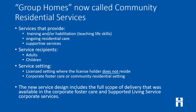Group homes — the lay term — are now called Community Residential Services. These are services that provide training or habilitation within the Developmental Disabilities waiver. Habilitation is very important and required to teach life skills, train, educate, mentor, and challenge the person to be as independent as possible. They also provide ongoing residential care and supportive services. Service recipients could be adults or children depending on the licensure. The service setting is a licensed setting where the license holder does not live at the same location as the people receiving services, or a corporate foster care or community residential setting.